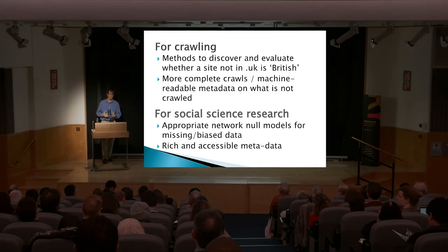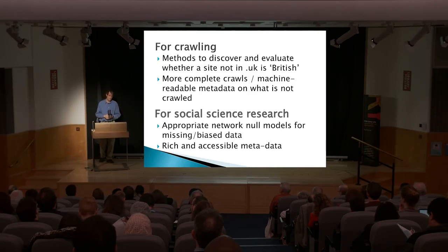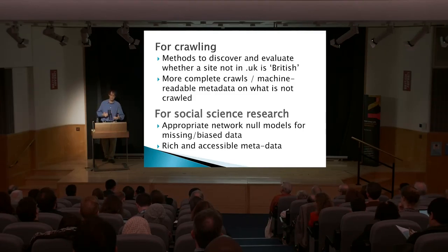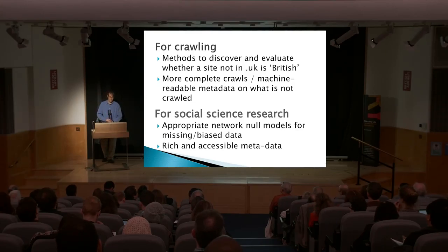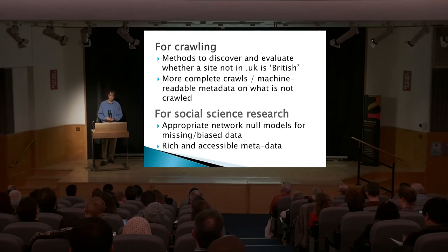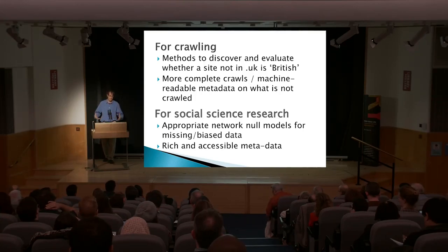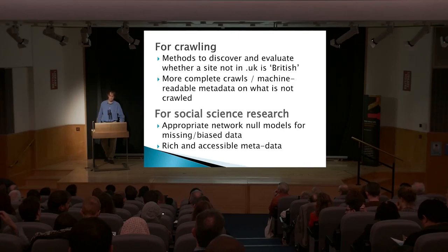Shifting to the social science research side: it's clear we have to become much better at dealing with missing and biased data, and that straight inferential statistics is not going to take us where we need to go — so thinking about appropriate models to use in those tasks. And working on making richer and more accessible metadata available, very much in line with what Jane and Bukenji were saying — opening up this data so that people with a variety of skill sets can make use of it. This is a real opportunity for the Alan Turing Institute working in partnership with the British Library to enrich the data available for the whole of research.